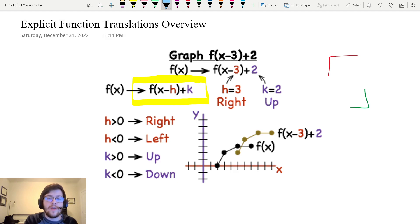So you see in this example, we have f(x-3)+2. So h is positive 3, that means we're moving the function 3 right. k is positive 2, that means we're moving the function 2 up. So always remember f(x-h)+k: h tells you your left-right, k tells you your up-down.